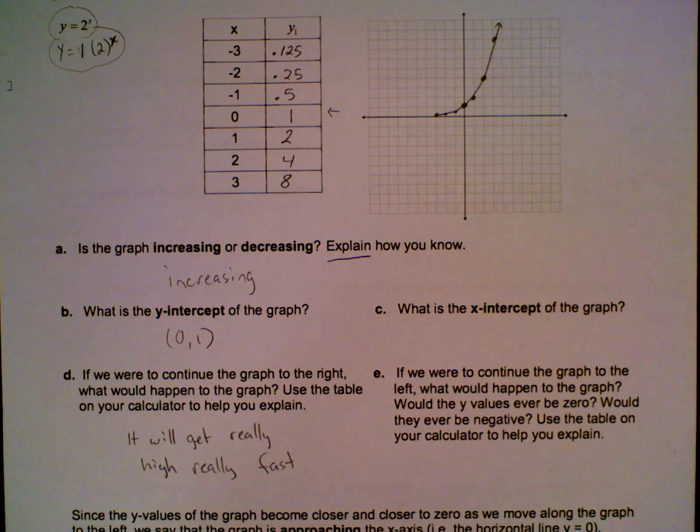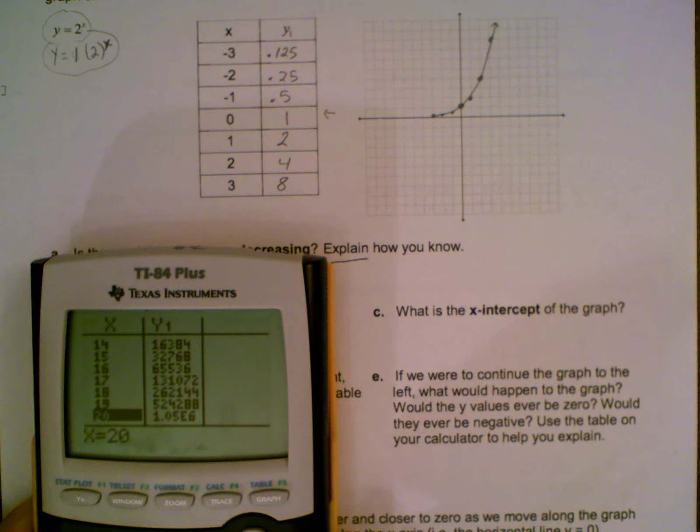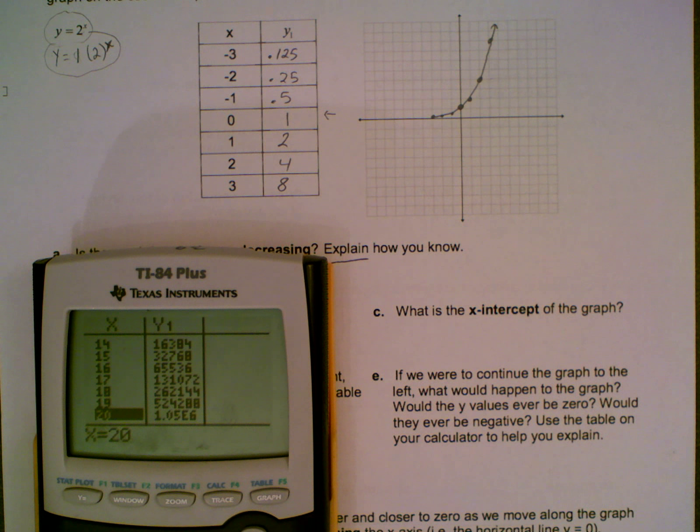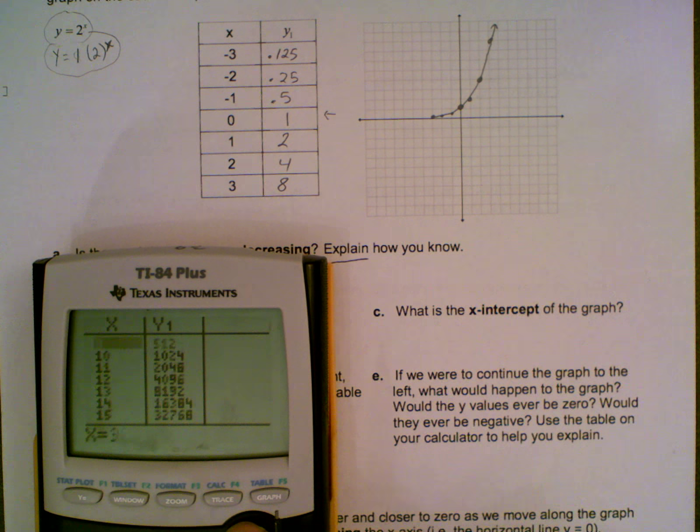Question E. If we were to continue the graph to the left, what would happen to the graph? Would the y values ever be 0? Would they ever be negative? Use the table on your calculator to help you explain. So we're going to bring the calculator back. So now I'm going to scroll the other way, and I want to see if I continue my x values getting smaller. Do we ever get to 0? Do we cross 0 and get to negative numbers? What happens? So let's take a look.